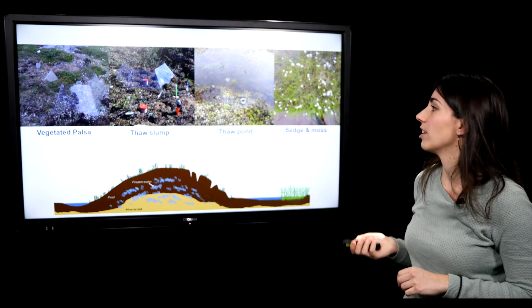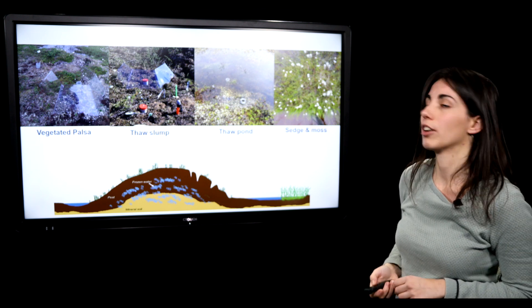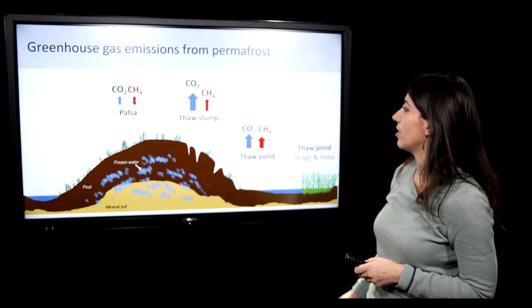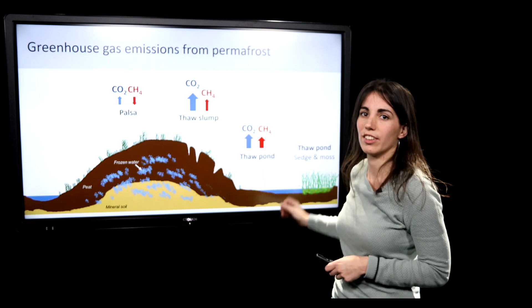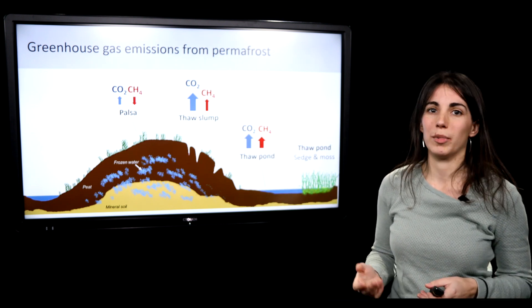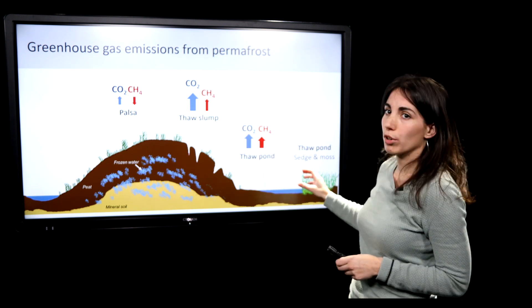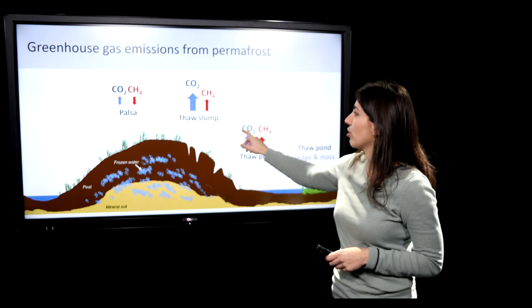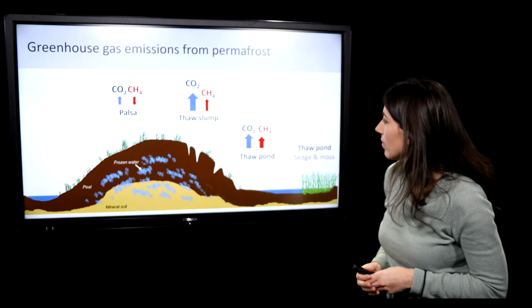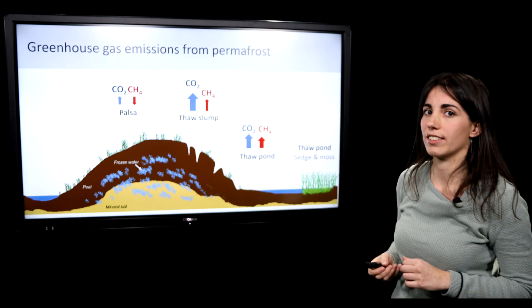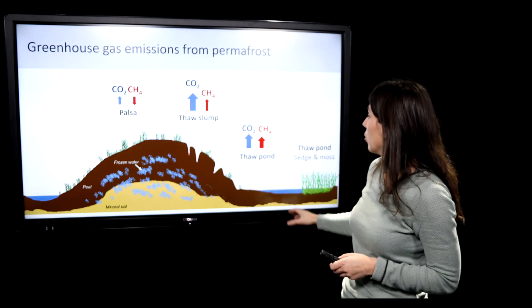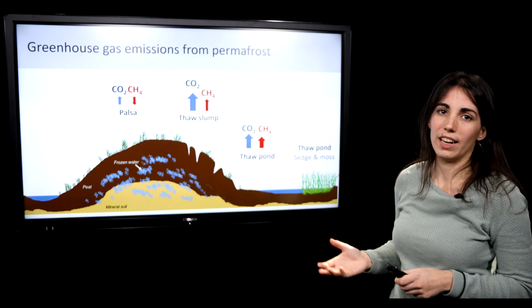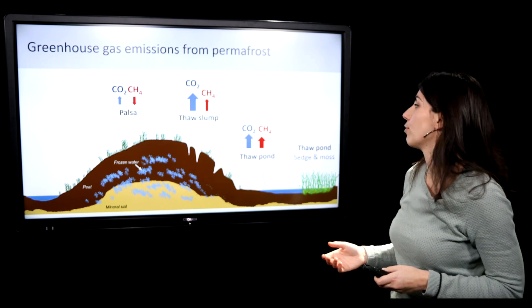And so here we're looking at the greenhouse gases that are arising from these areas. And what we find is that there is a stark difference between these different areas in the greenhouse gases that are emitted. One important thing is that when permafrost degrades, we get higher emissions of methane, and this is a stronger greenhouse gas than CO2. So the degradation of permafrost is starting to emit more methane, and this can have consequences for climate.